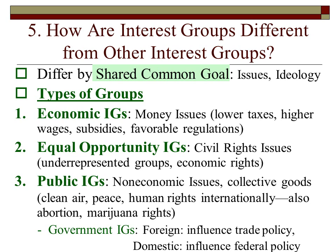The second type is equal opportunity interest groups, which are less interested in money issues and more interested in civil rights — bringing issues of underrepresented groups or economic rights to the foreground. Third are public interest groups, which focus on non-economic collective goods that everybody benefits from: clean air, clean water, peace, and human rights internationally. They also deal with issues like abortion rights, marijuana rights, and marriage rights.